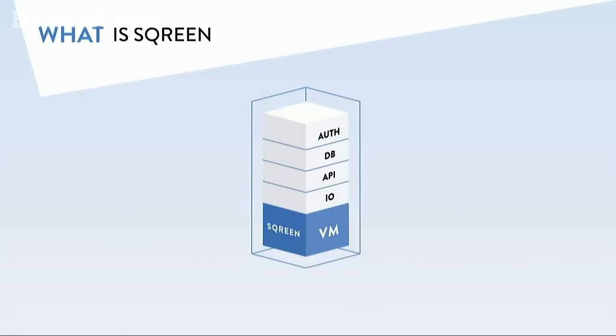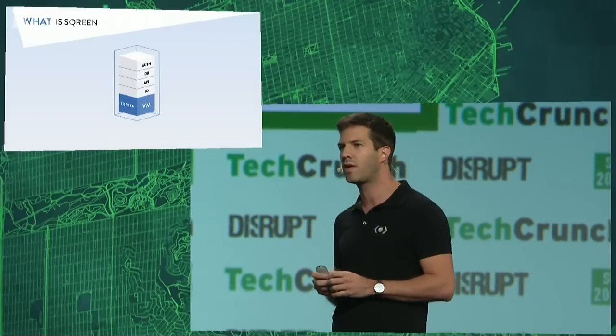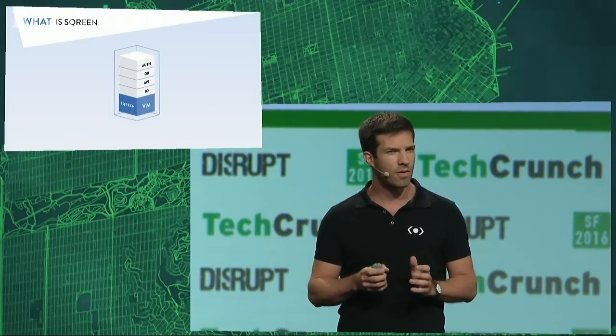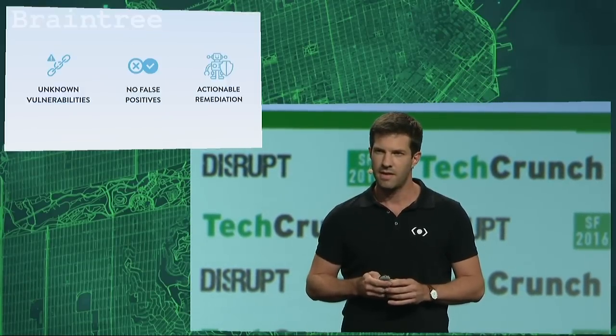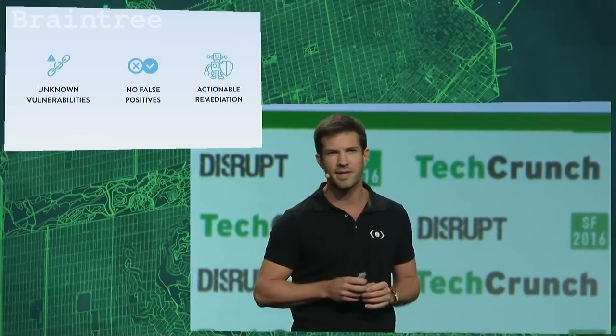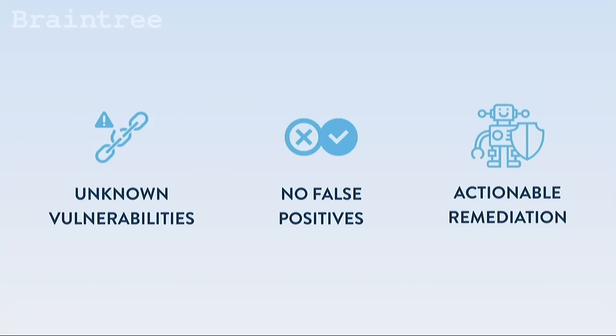Screen is a security solution that protects your application at runtime. We monitor critical functions inside the application, like authentication or databases. Being inside the app allows us to block unknown vulnerabilities, because our protection is based on logic, not just patterns. And that's also the way we tackle false positives. If you want to get the exact details about the vulnerabilities, we provide them directly in the interface, like if you were using your debugger.